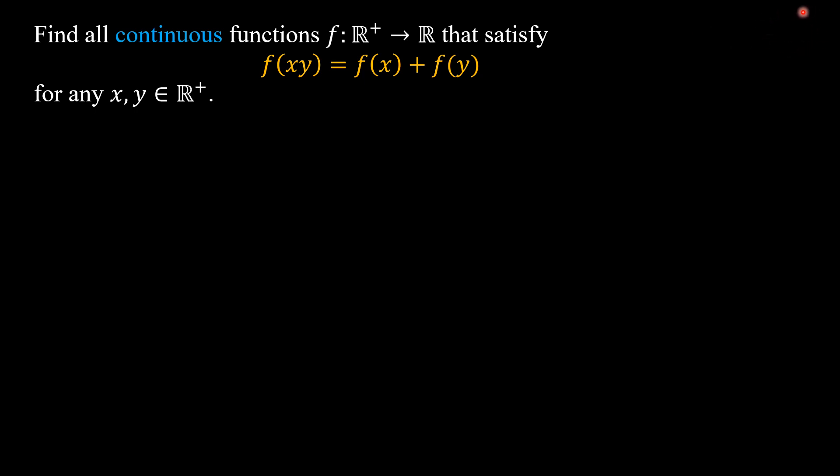We are going to use the results from that video. As the beginning, we can use the quantity on the left-hand side and the quantity on the right-hand side as the power of Euler number e. That is, e to the power of the left-hand side equals e to the power of the right-hand side. And e to the power of the right-hand side equals e to the power of f(x) times e to the power of f(y).